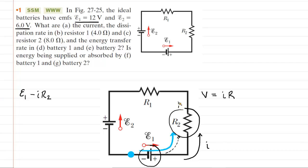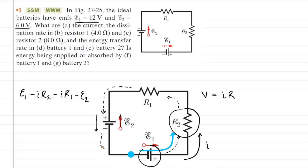Continuing our counterclockwise trek, we encounter R1 next. Again, we're moving with the current, so it's a negative potential change: minus I times R1. We then encounter the other battery, and this time we're moving against the direction of its EMF — traveling downward while the EMF points upward — so the potential change is negative: minus EMF2. Continuing counterclockwise, we return to our starting point.